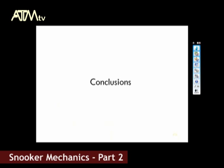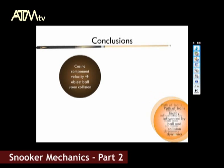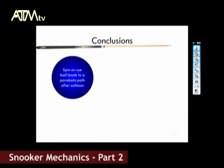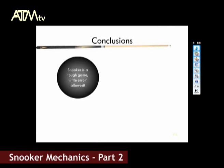Now we can look at our conclusions. The path the balls take depends highly on the mechanics involved: momentum, coefficient of restitution, friction, and spin. Whenever we want to look at the object ball's velocity after collision, all we need to do is consider the cosine component of the cue ball. In a ball-to-cushion collision, the initial velocity has no effect on the rebound angle, which is always less than the initial angle. A parabolic path occurs due to rotational kinetic energy being transferred to linear kinetic energy. The reason the ball rolls is because of the friction between itself and the table surface. The amount of error allowed when potting is very small for realistic distances — we are talking degrees in the decimals.